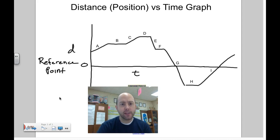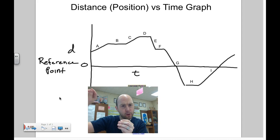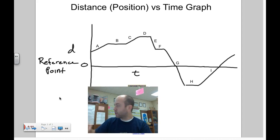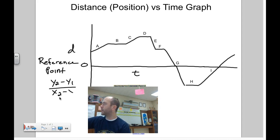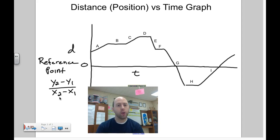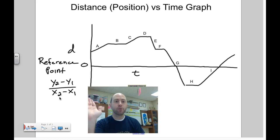Let's look at A. You see A is an upward diagonal line. What that's saying is I'm starting at a certain distance away from the house — I didn't start at home, I started somewhere else — and I'm moving further and further away from home. If you calculate the slope, which is y2 minus y1 divided by x2 minus x1, the slope is constant, meaning I'm moving away at a constant rate.